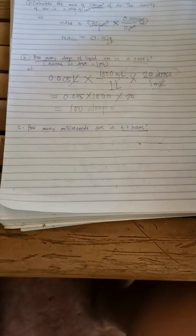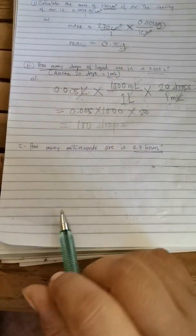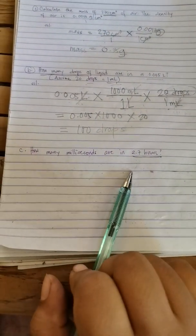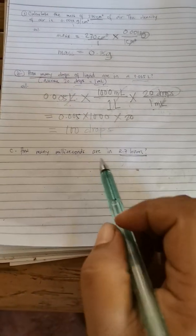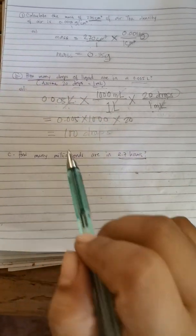Now for our last example, how many milliseconds are in 2.7 hours? So we have to convert time, 2.7 hours into milliseconds.